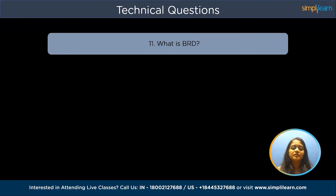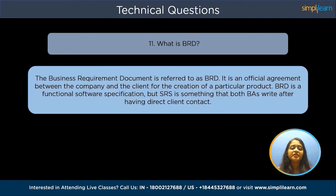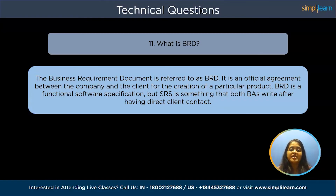Next is: what is BRD? The Business Requirement Document, referred to as BRD, is an official agreement between the company and the client for the creation of a particular product. BRD is a functional software specification, but SRS is written after having direct client contact. BRD is developed by a business analyst following their direct connection with the client, and it contrasts with SRS which is designed based on technical skills and requirements.